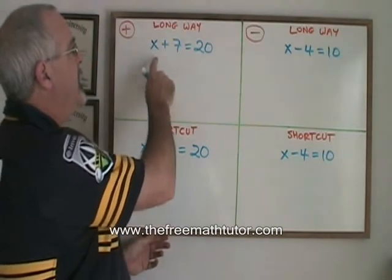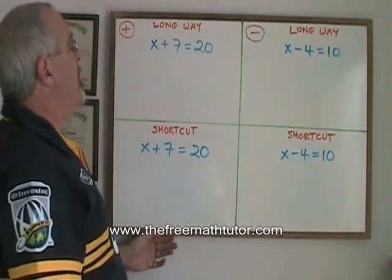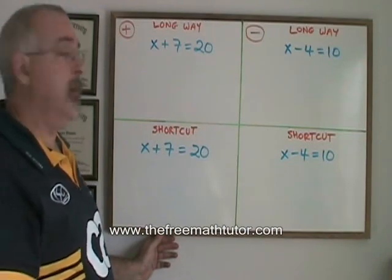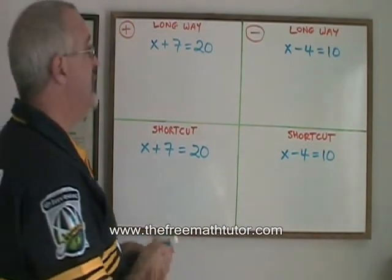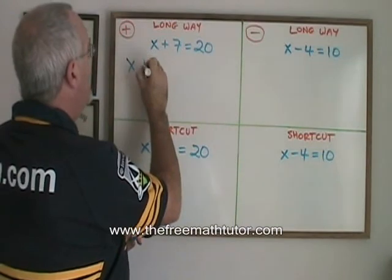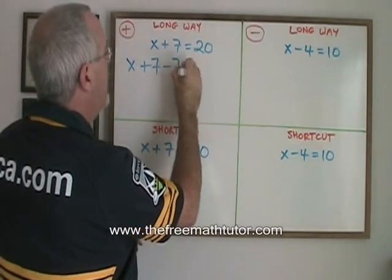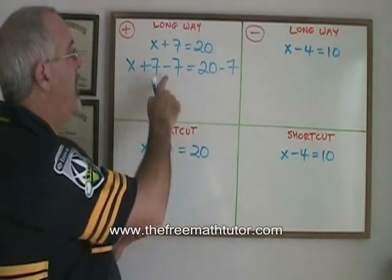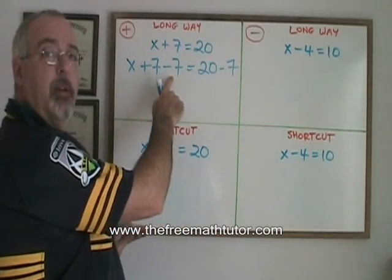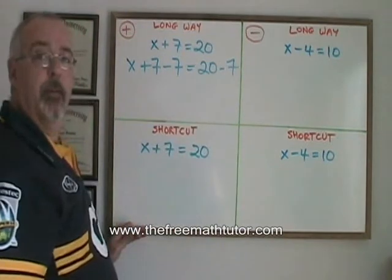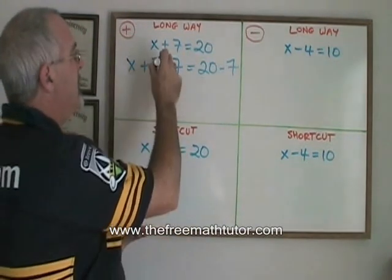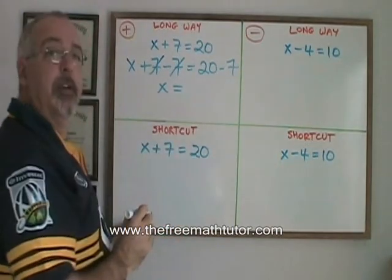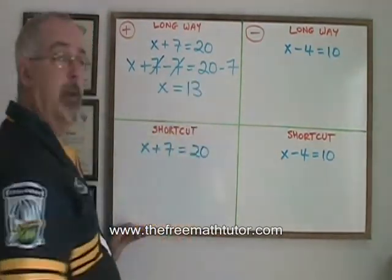In the expression x plus 7 equals 20, my x is having a 7 added to it. What I do is show that I am subtracting a 7 from both sides. I can subtract a 7 from the left side, as long as I'm also subtracting it from the right side. The 7s on the left side cancel, and that leaves my x isolated. It is equal to 20 minus 7, which is 13. I have my answer.